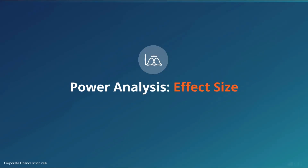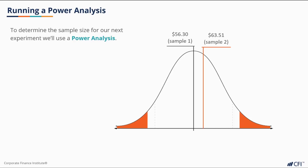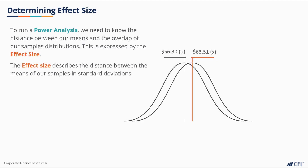After reviewing the results of our first test, we've decided we want to run the test again with a better sample size. While we failed to reject the null hypothesis in our last test, we still suspect that a difference might exist and that a more sensitive test would be able to pick it up. To determine the sample size for our next experiment, we're going to run a power analysis. To run this analysis, we'll need the distance between means and overlap of our sample distribution. We'll do this by determining the effect size.